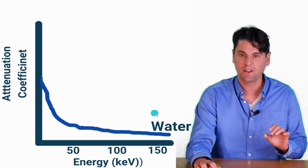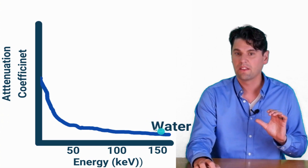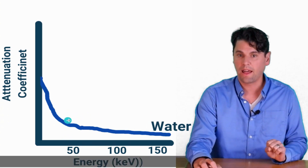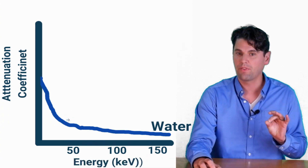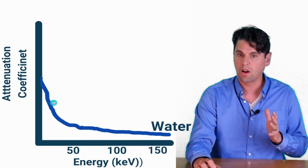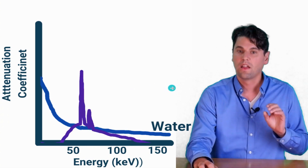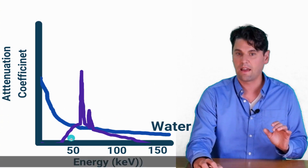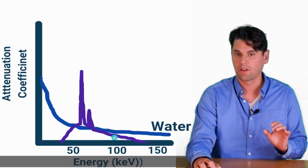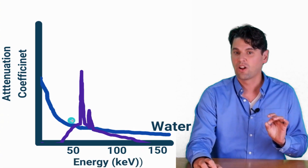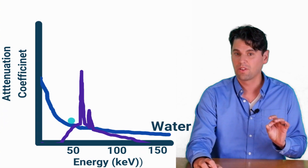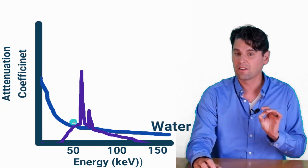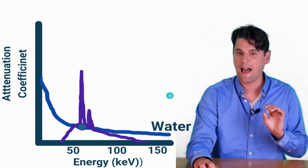If you remember from photoelectric interaction — if you think of a material like water — these are higher energy x-rays on one end, lower energy x-rays on the other. If you look at one given energy on the graph, you can read off the attenuation coefficient. You can see that as the energy gets lower, the attenuation gets significantly higher. Our actual x-ray spectra overlay this, so x-rays at lower energy have higher attenuation values.